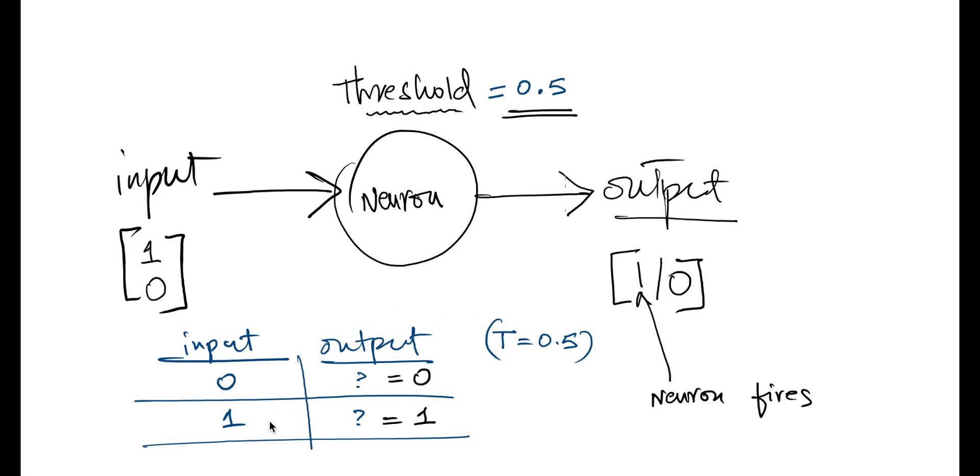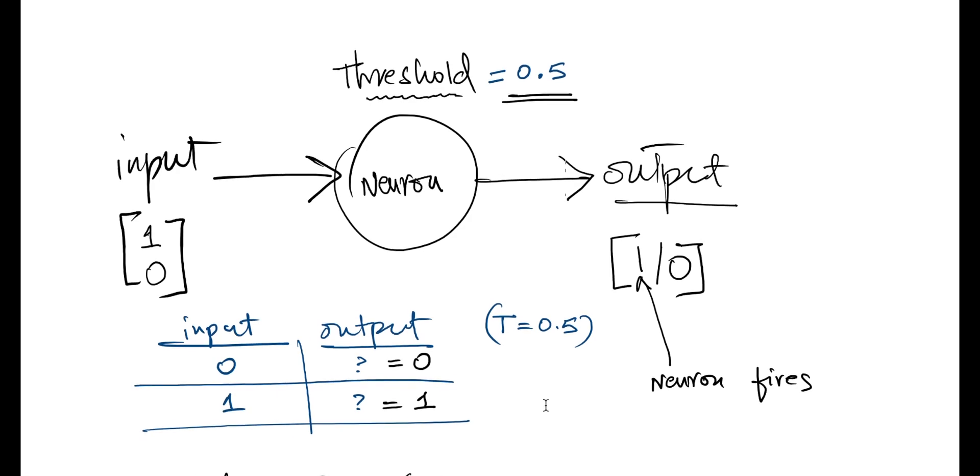Only then the neuron would fire and result in a positive output. We related this with the idea of neurons having to reach a certain potential within them so as to fire an action potential.